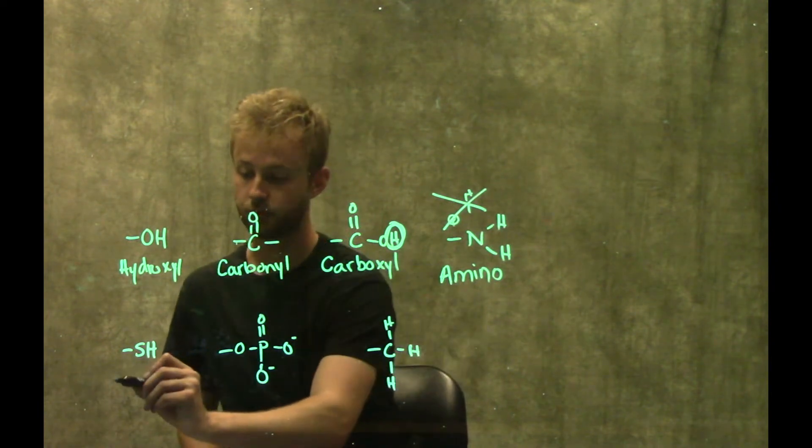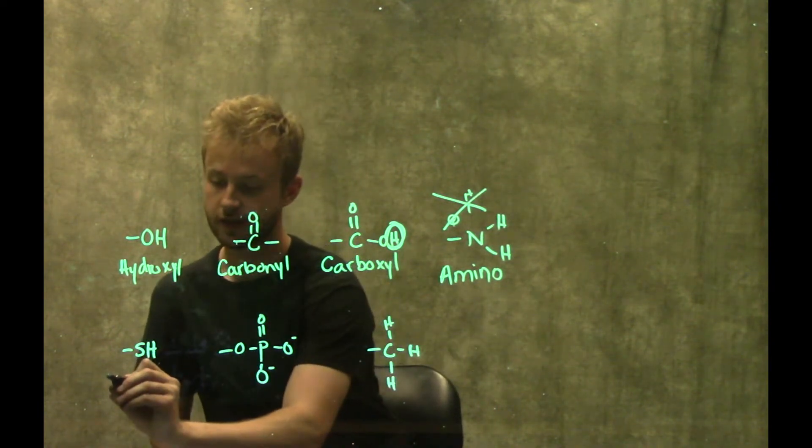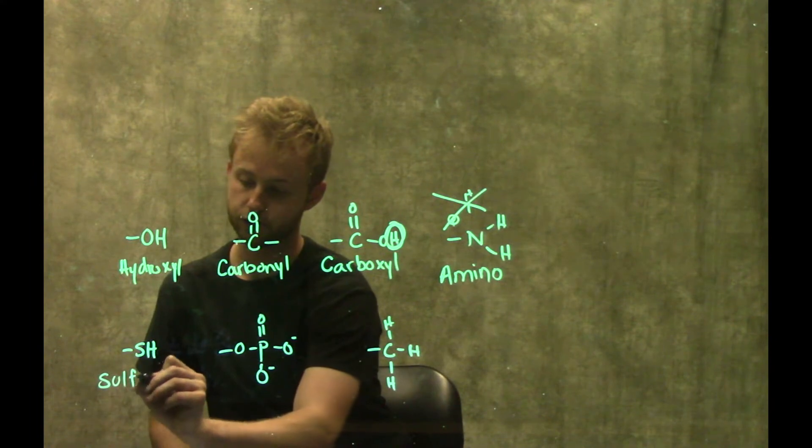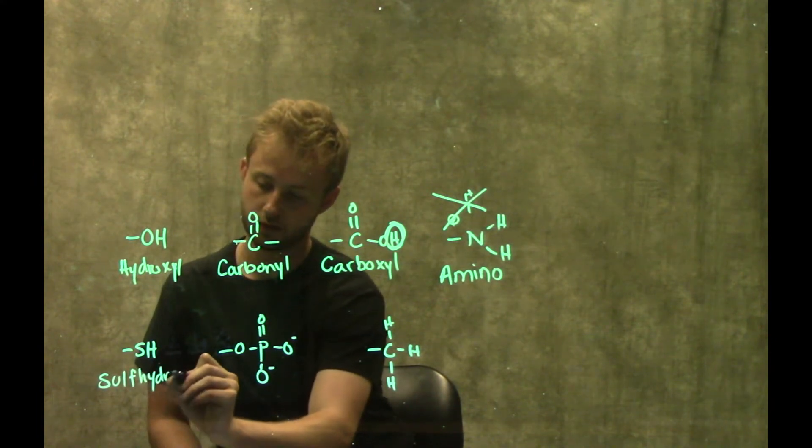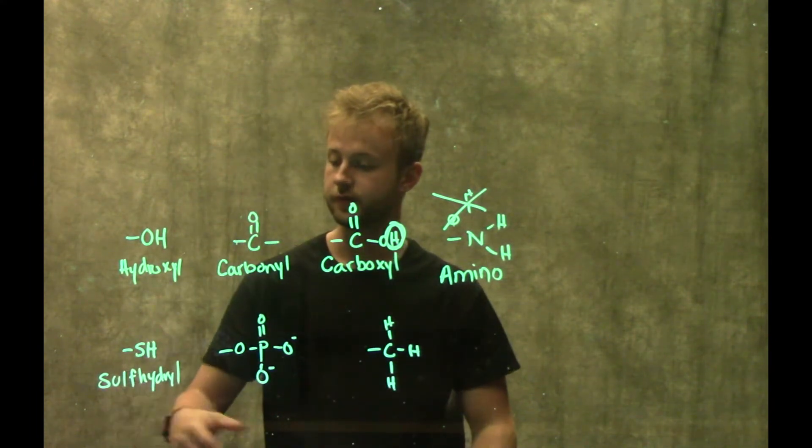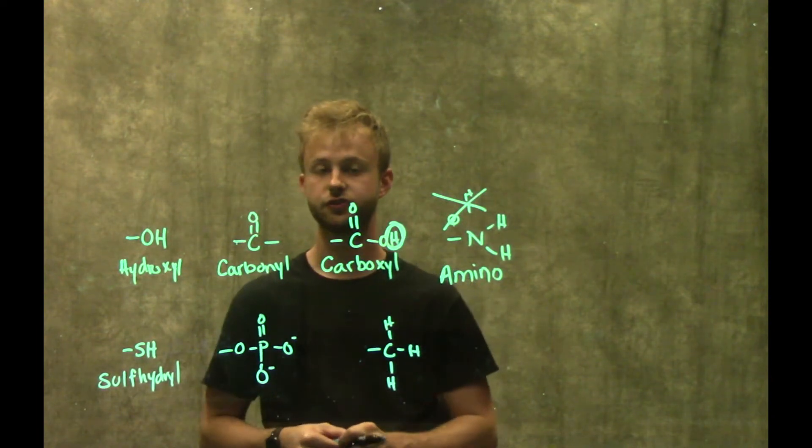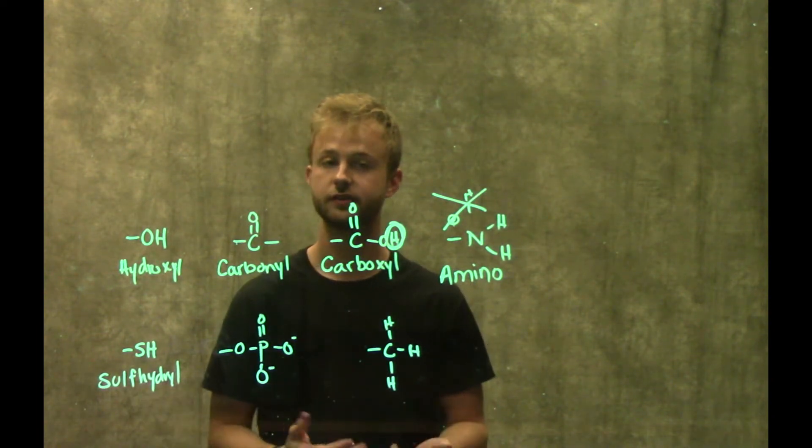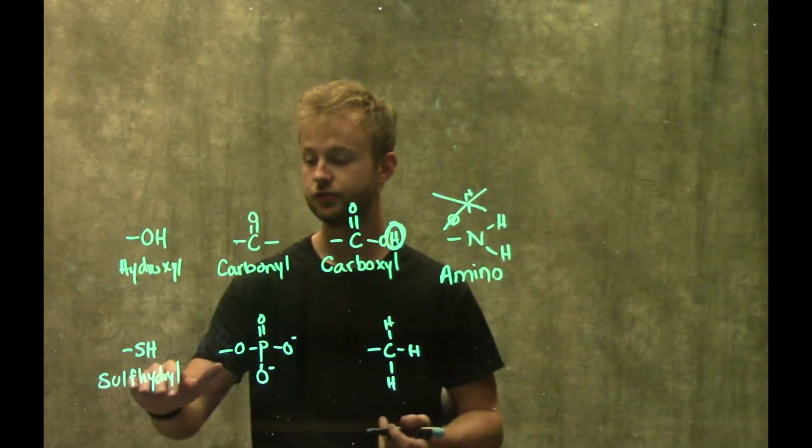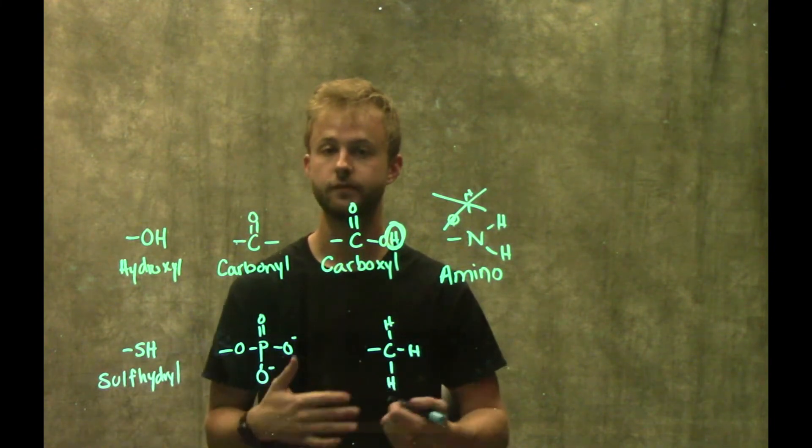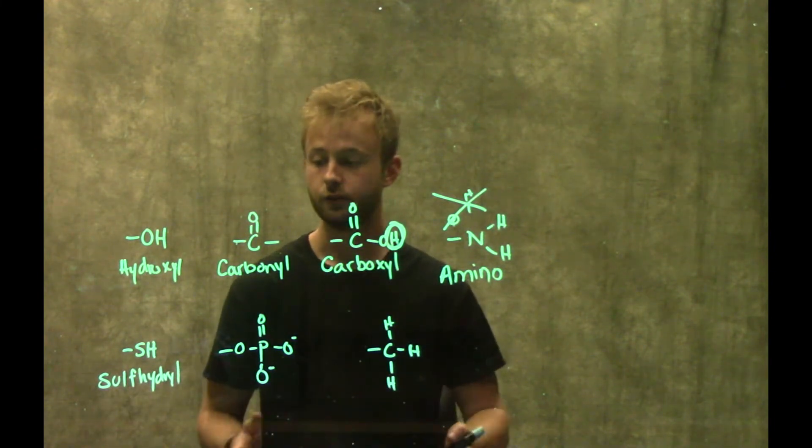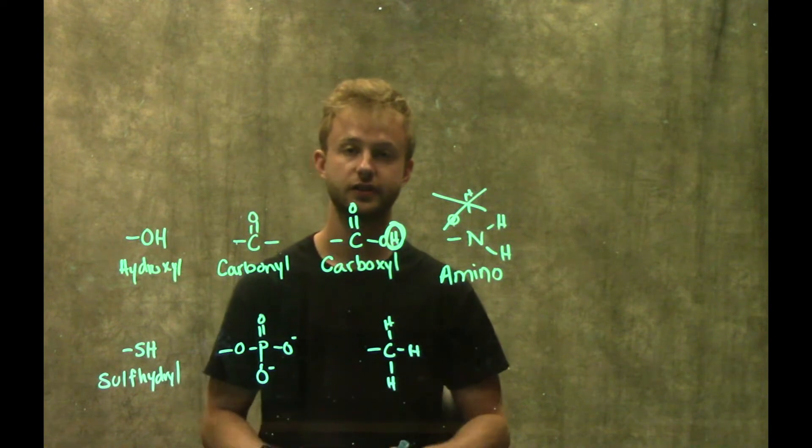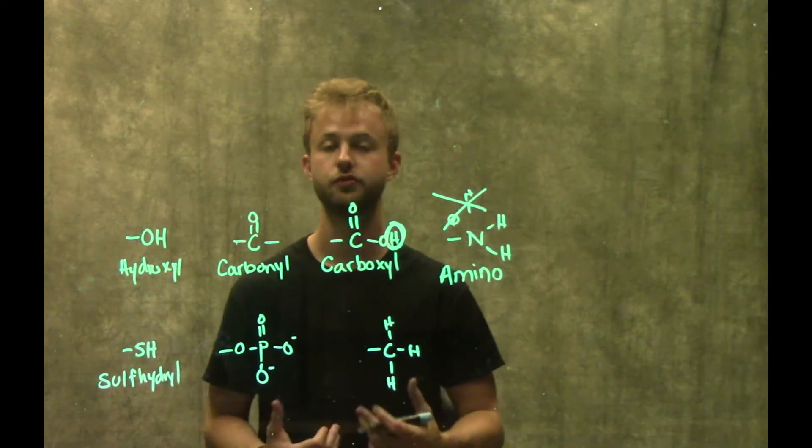Another group that's important in protein structure is this sulfhydryl group. The sulfhydryl group is super important in protein structure because it's found on a certain amino acid called cysteine. These two groups can interact with one another to form something called a disulfide bond, which is a very stable interaction that helps to stabilize the overall structure of a lot of the proteins in our bodies.